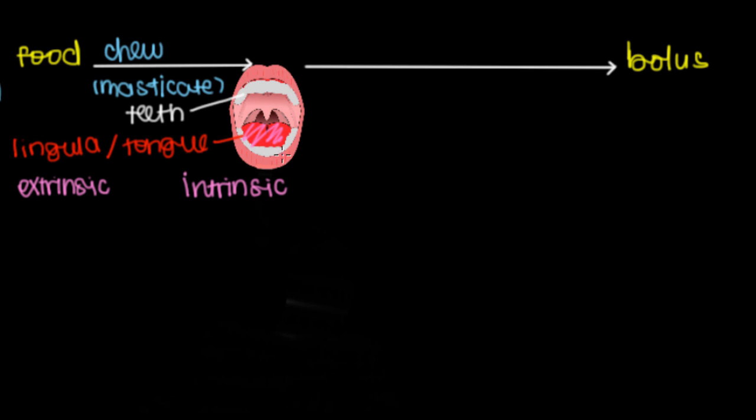Extrinsic muscles let us elevate or raise the tip of our tongue, depress or lower the tip, protrude our tongue out of our mouth, and retract our tongue back into the mouth.